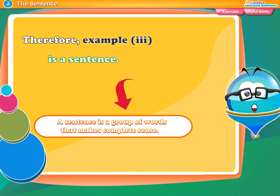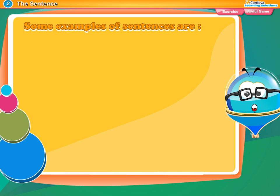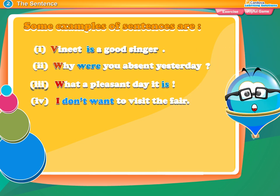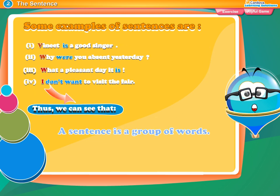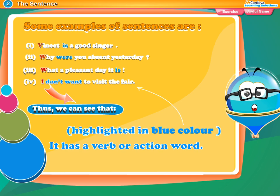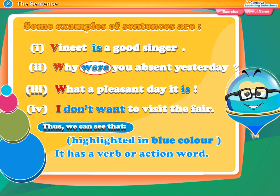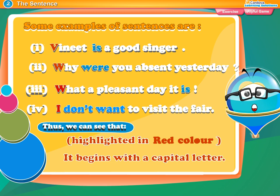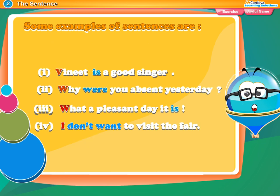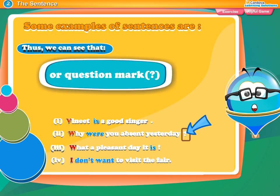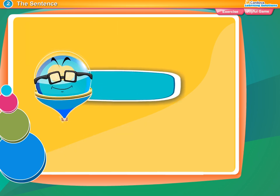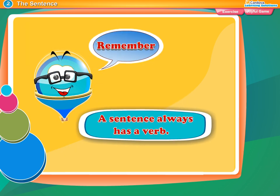Some examples of sentences are: 'Vineet is a good singer.' 'Why were you absent yesterday?' 'What a pleasant day it is!' 'I don't want to visit the fair.' A sentence is a group of words that makes complete sense, has a verb or action word (highlighted in blue), begins with a capital letter (highlighted in red), and ends with a full stop, question mark, or exclamation mark. Remember: a sentence always has a verb.